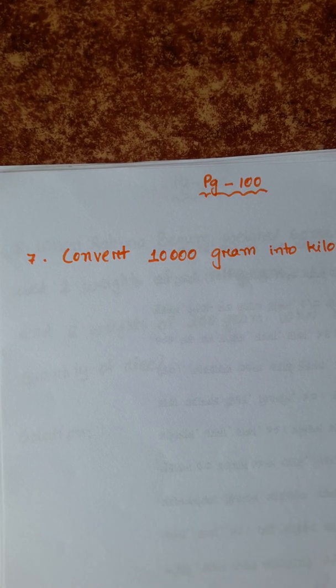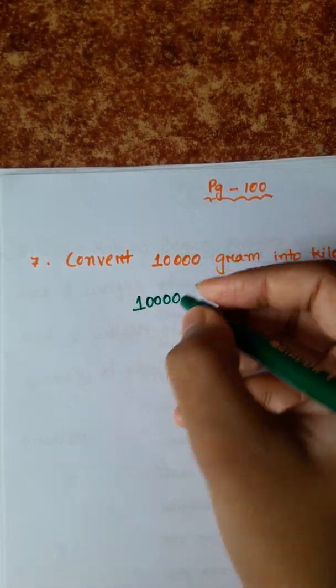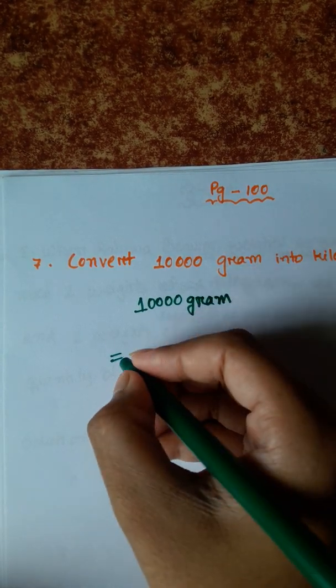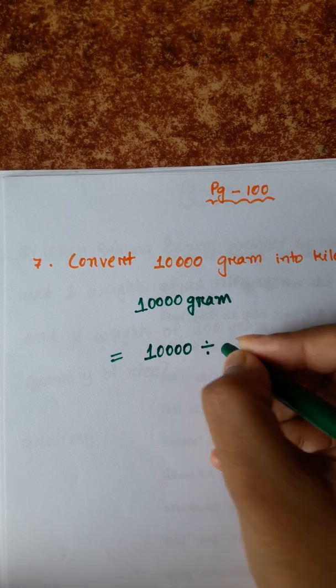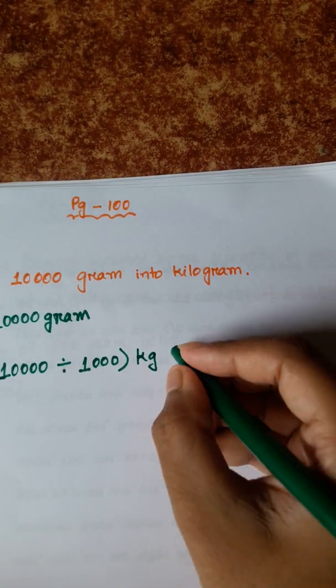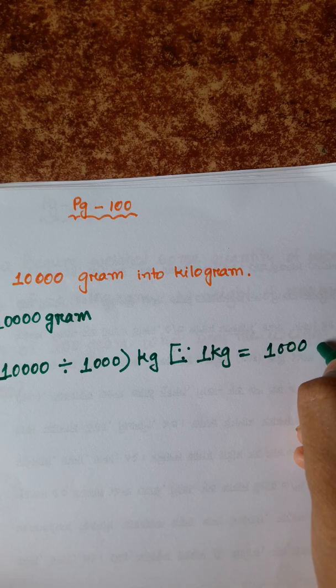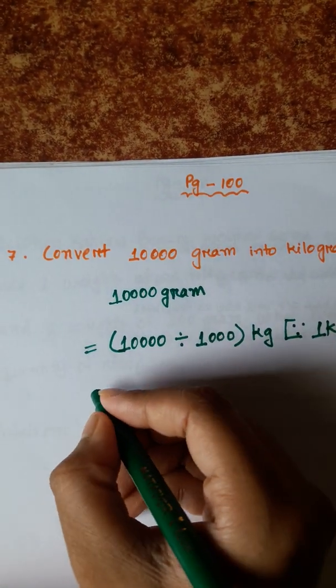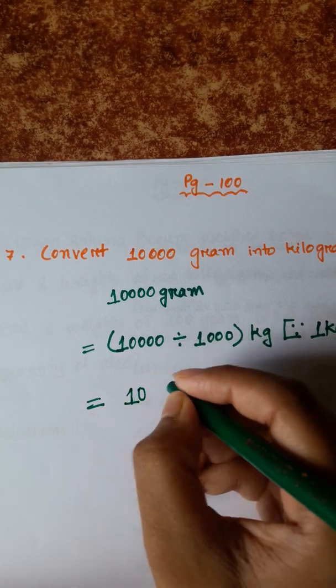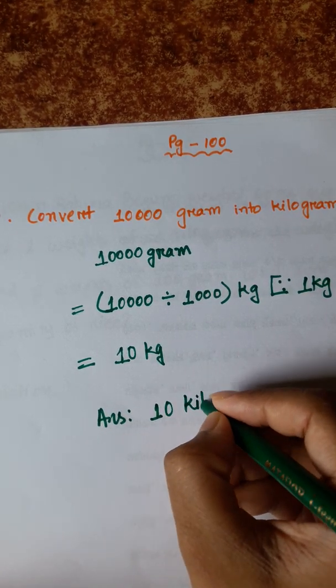Now the next math, number seven, convert 10,000 gram into kilogram. Similar method. 10,000 divided by 1000 kg, since 1 kg is equal to 1000 gram. So 10,000, three zeros, three zeros, cancel them. The result is 10 divided by 1 is 10 kg. So answer is 10 kg.